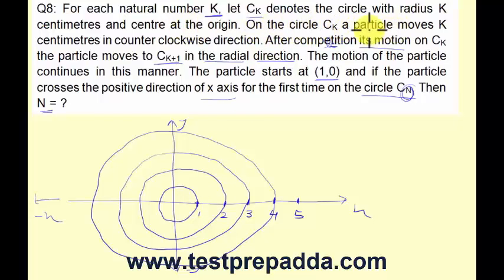The particle moves k centimeters. So here, since it starts at (1,0), it will move 1 centimeter. And since the radius is 1 centimeter, this will also be 1 centimeter. After completing 1 centimeter, it says the particle moves to CK plus 1. That means now it will move to the circle of radius 2 centimeters. And how does this move? In the radial direction. This is the way it moves from this circle to this circle. And now, in the second circle, which is of radius 2 centimeters, the particle moves 2 centimeters.